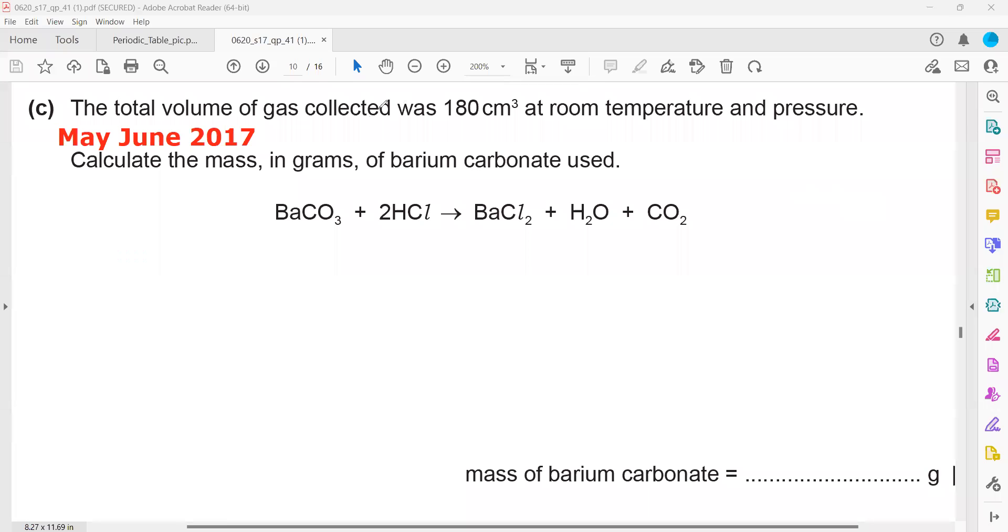This problem is from May/June 2017. The total volume of gas collected is 180 cm³ at room temperature and pressure. At room temperature, water won't be a gas, so the gas is actually carbon dioxide. This is the volume of carbon dioxide. We have to calculate the mass in grams of barium carbonate.